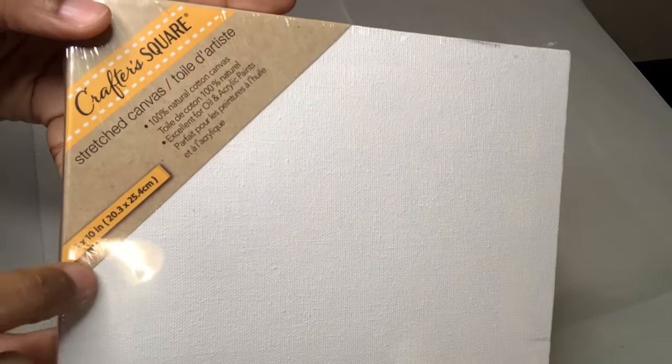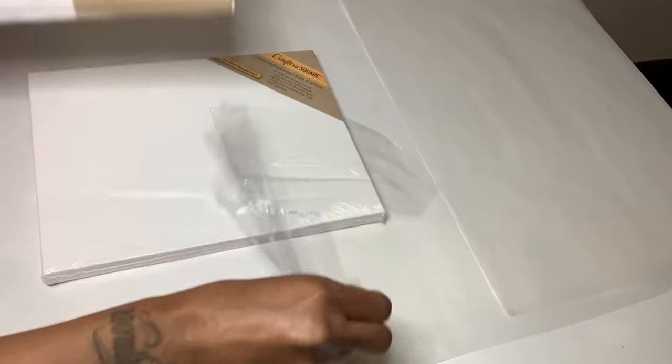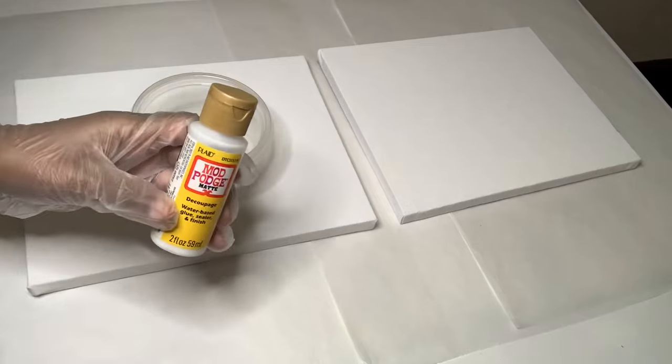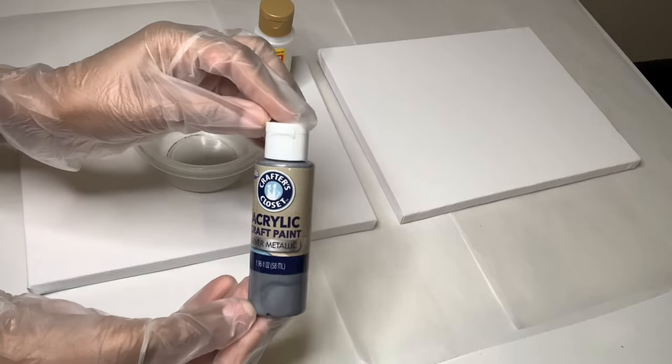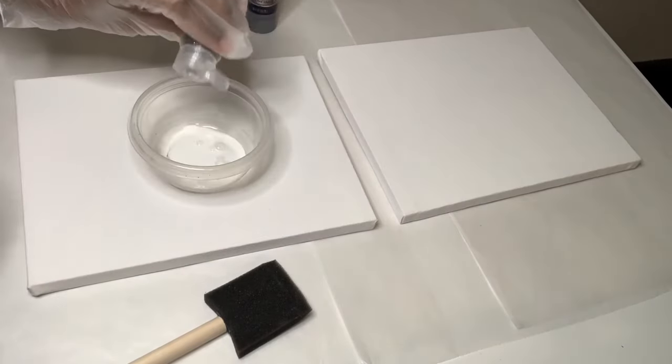For this next project I'm going to be using two of these 8x10 canvases that I purchased from Dollar Tree. I'm creating a simple mixture which consists of Mod Podge, craft paint, and also silver glitter. I'll also be using a foam brush to mix everything up.